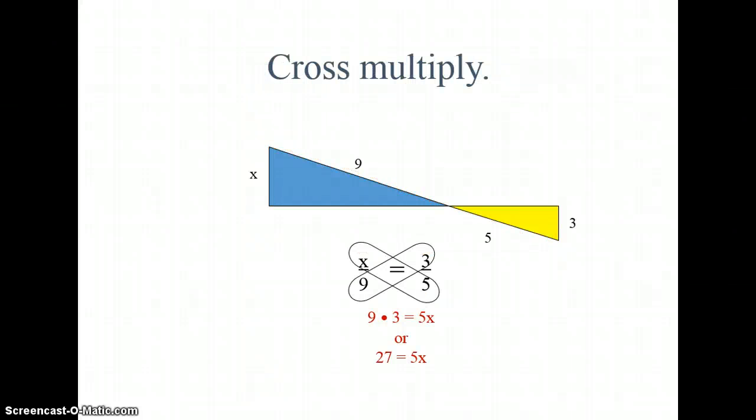You would solve it by cross-multiplying and then dividing. You should have gotten 5 and 2 fifths equals x.